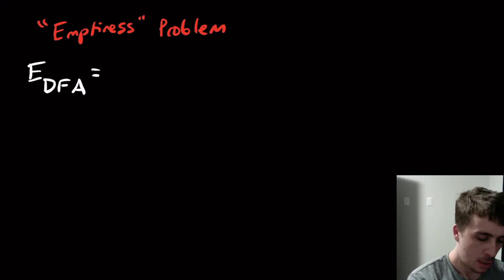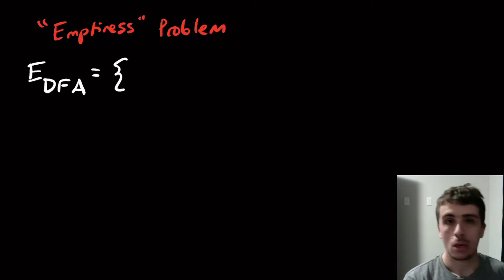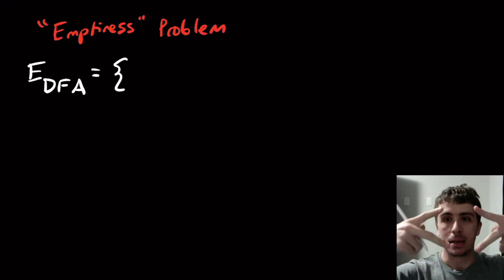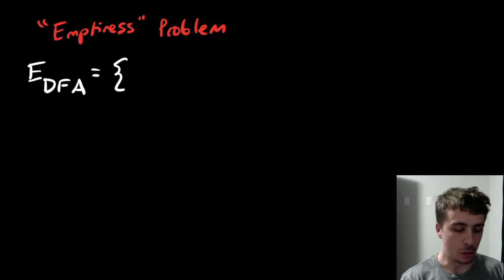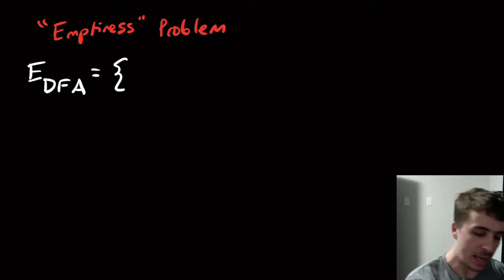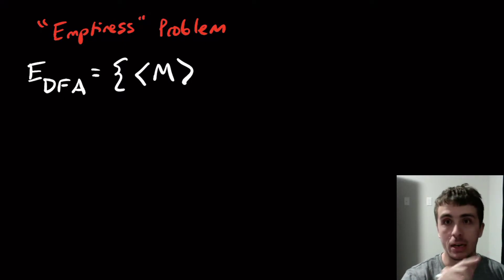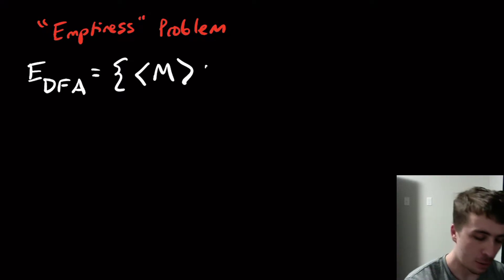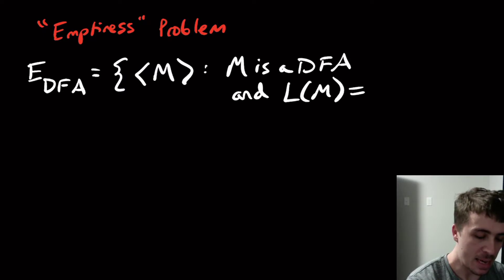So what is this language? Well, the A language had encodings of machines and strings together. Here, what we want to do is we're going to have single machines only, so no input string at all, just the machine itself. And here, M is a DFA, obviously. And the language of M is empty.